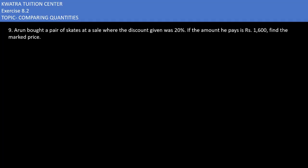Arun bought a pair of skates at a sale where the discount given was 20%. The amount he pays is Rs. 1,600. Find the marked price.